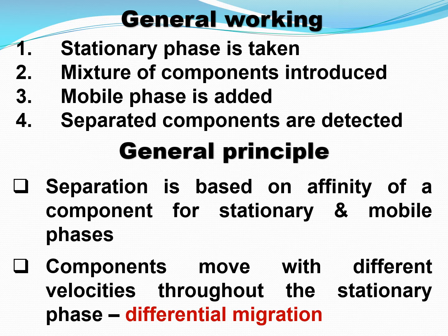When you add the mobile phase, the components with more affinity for the mobile phase will move very fast, whereas components with more affinity for the stationary phase will move very slowly. This movement at different velocities throughout the stationary phase is called differential migration, and this is the basic principle behind any chromatographic separation.